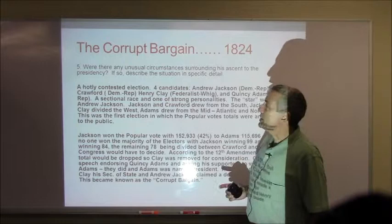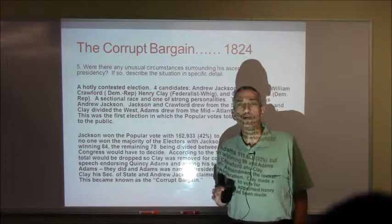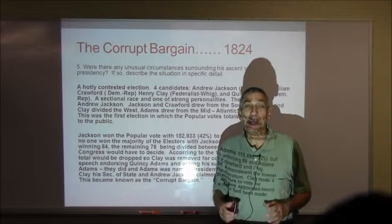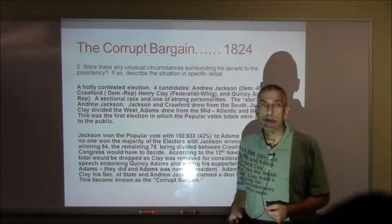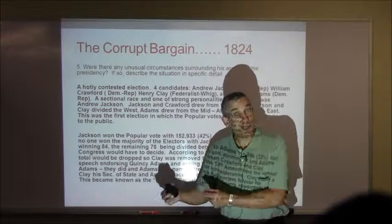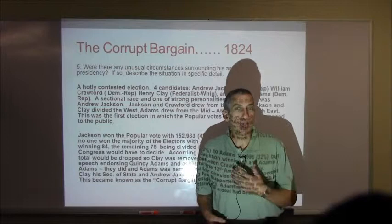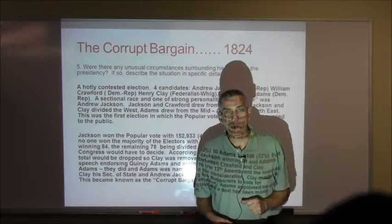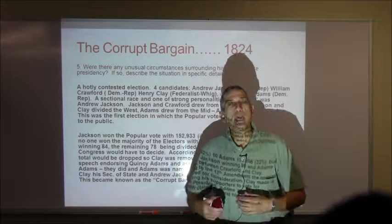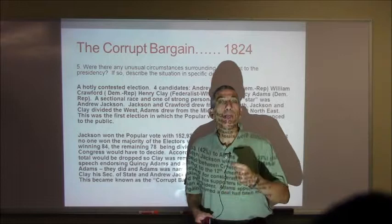The corrupt bargain of 1824 goes along with any unusual circumstances surrounding his ascent to the presidency. The election of 1824 was a four-way race, and anytime you have more than two candidates involved, you have the potential for hijinks and problems — and that was certainly true in 1824. Quincy Adams figured he was a shoo-in; he had been James Monroe's Secretary of State, and it seemed logical he would be the next president.